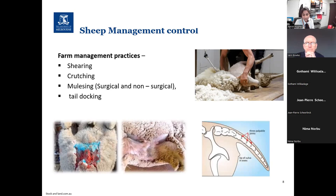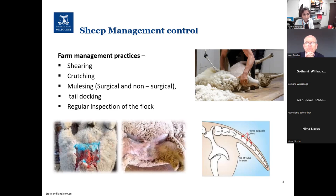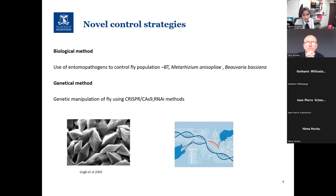Tail docking involves amputating the tail at the third caudal vertebra, reducing contamination of the tail and breech area from faecal matter. Regular inspection of the flock is important to identify animals with early fly strike so they can be treated promptly. Novel control strategies still at the experimental level include use of entomopathogens such as Bt toxins and fungi like Metarhizium, as well as genetic manipulation of the fly using methods like CRISPR-Cas9 and RNAi.